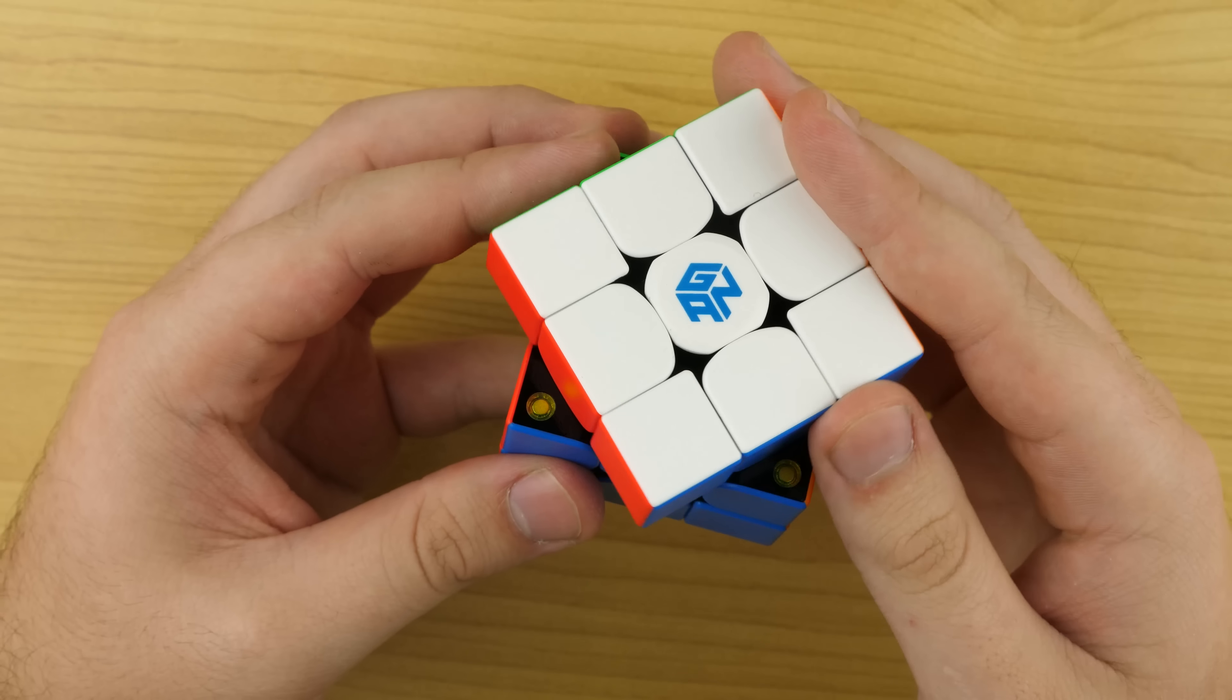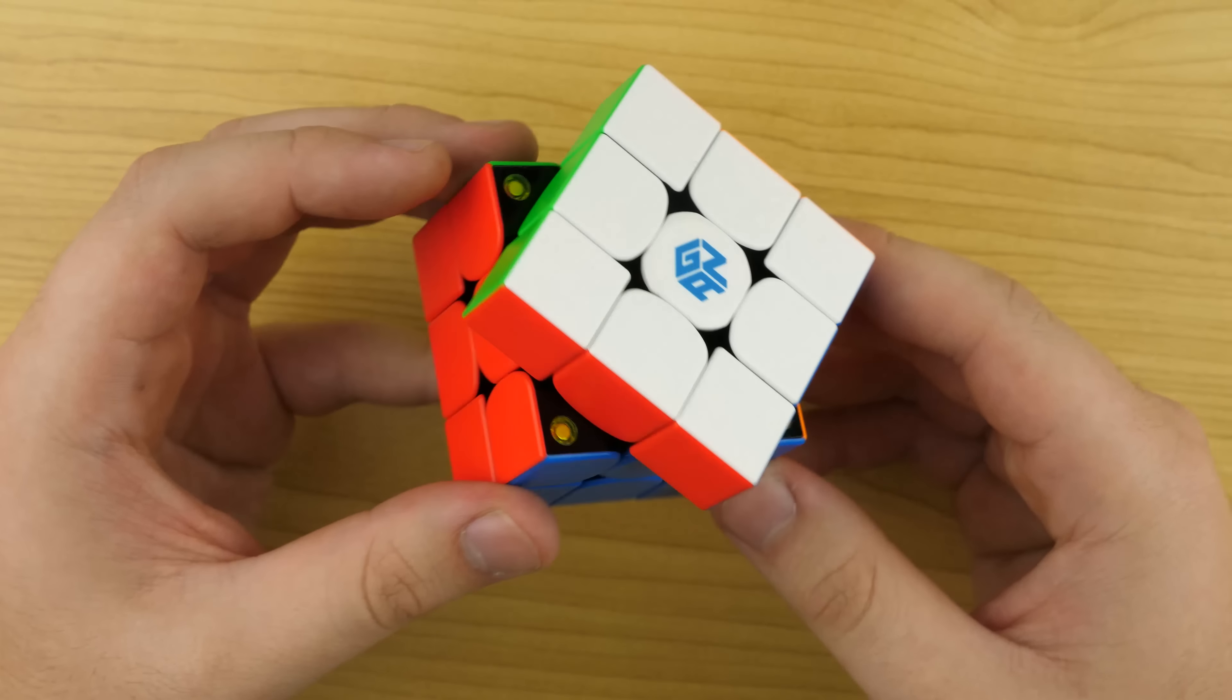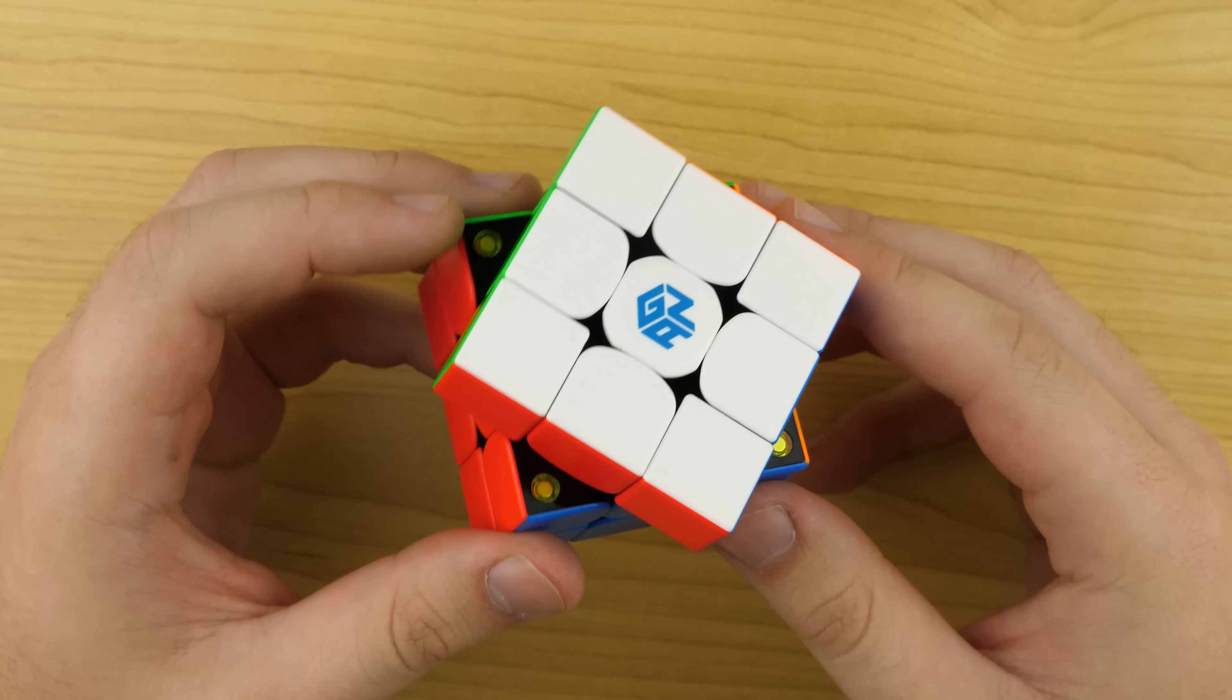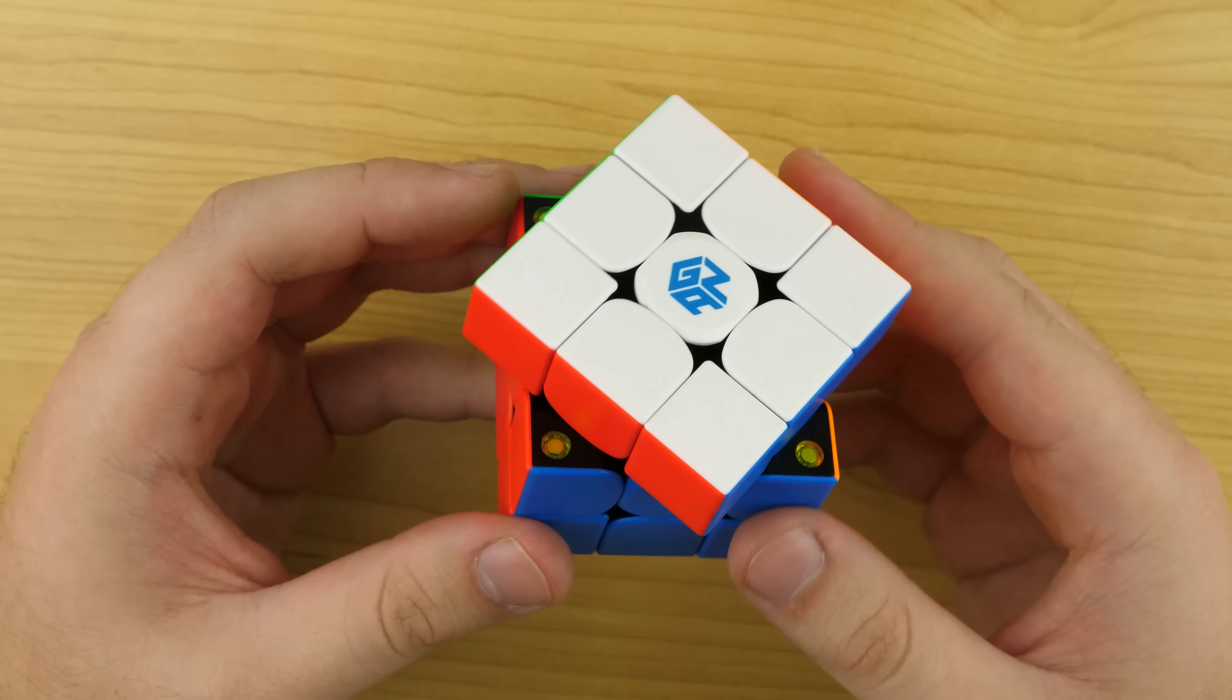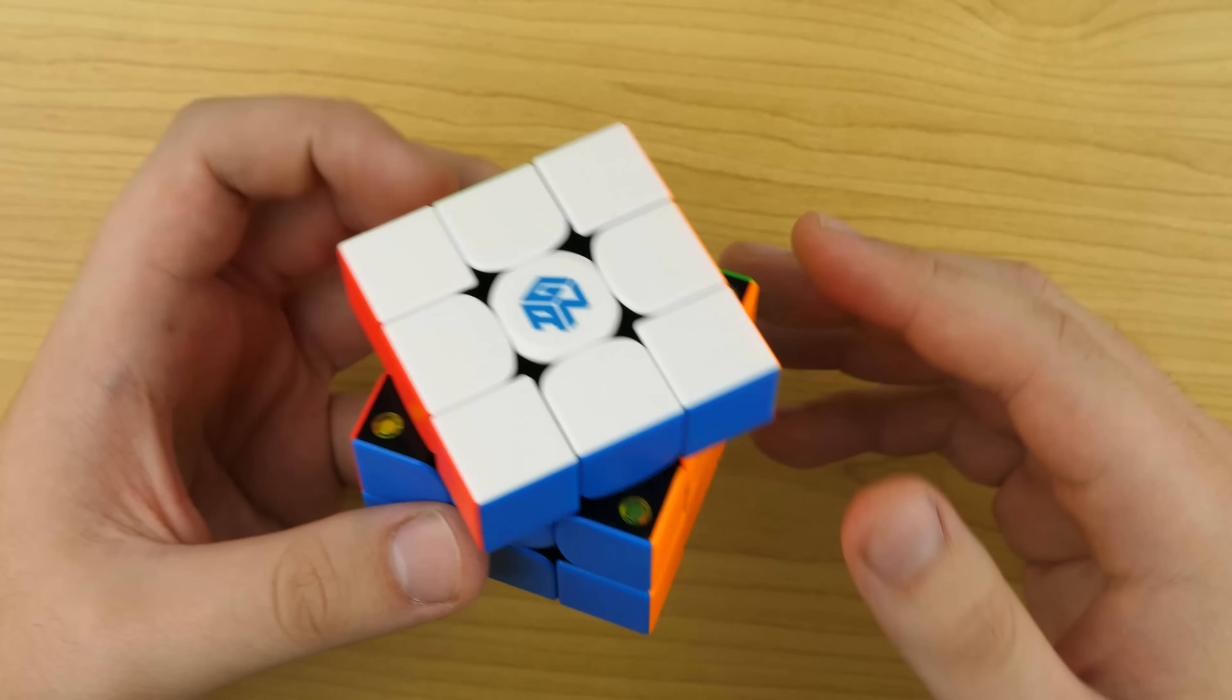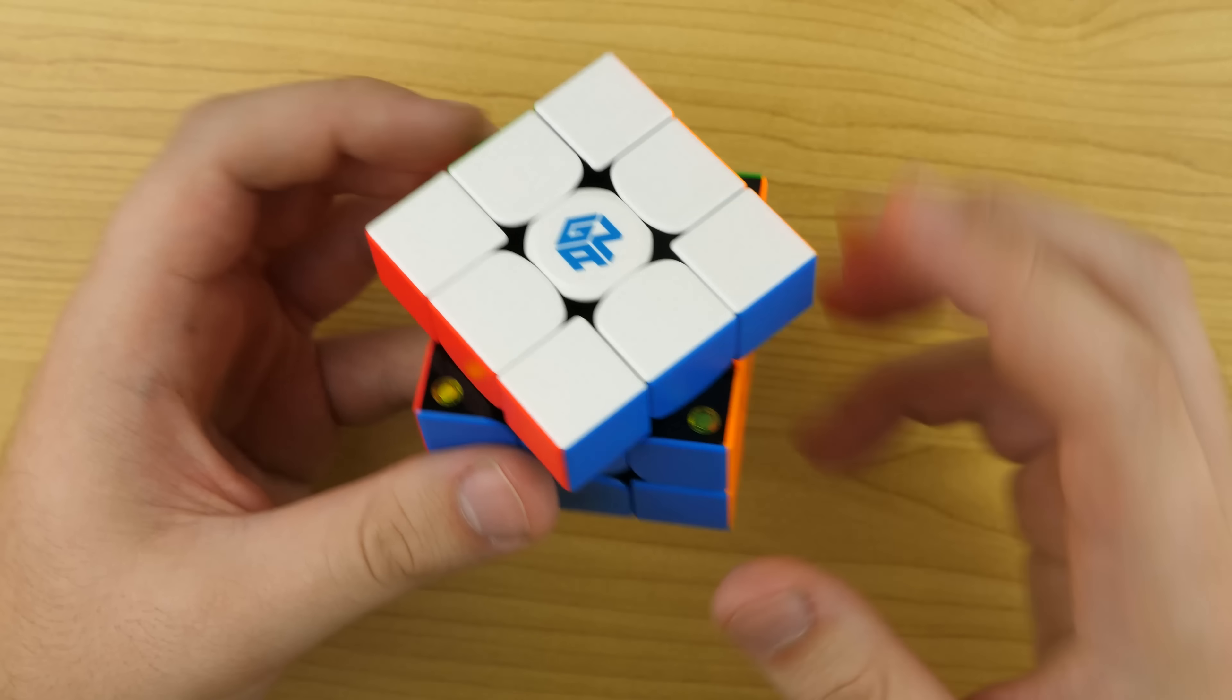I feel really disappointed that there's no adjustable magnets and the tensioning system only gives you two options. I really don't think that was a great decision from GAN. It's 2020 and cubes these days allow you to adjust these things, so it means it can suit a more range of cubing styles.